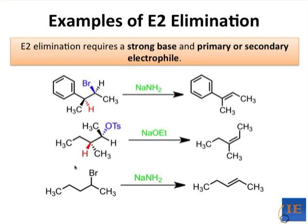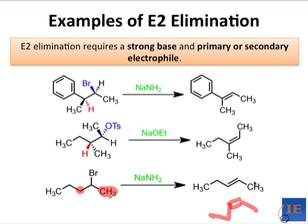Here's a deceptively simple example of E2. At first glance, it looks like one of the alpha hydrogens on the CH2 group is removed and Br leaves, forming a double bond. However, there are two important selectivity issues here. First, there are two sets of reactive alpha hydrogens — either the methylene on the left or the methyl group on the right can react. Secondly, if the methylene reacts preferentially, we could end up with either the cis or trans product, depending on which hydrogen is removed. Let's look at this example in more detail to discuss selectivity issues in elimination reactions.